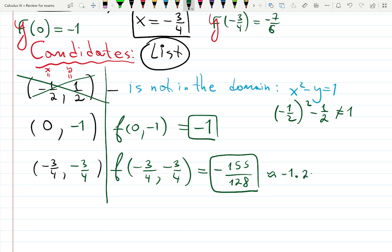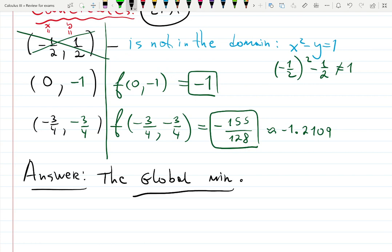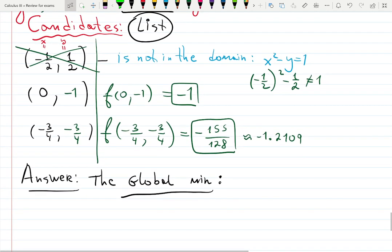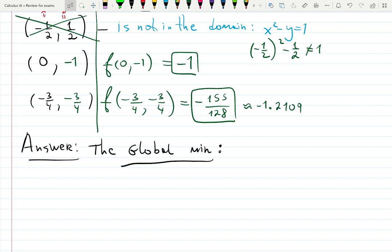So the answer is the global minimum. That's why we're checking local minimums and local minimums not on the edges and then at the edges. The global minimum happens at the point minus three quarters.